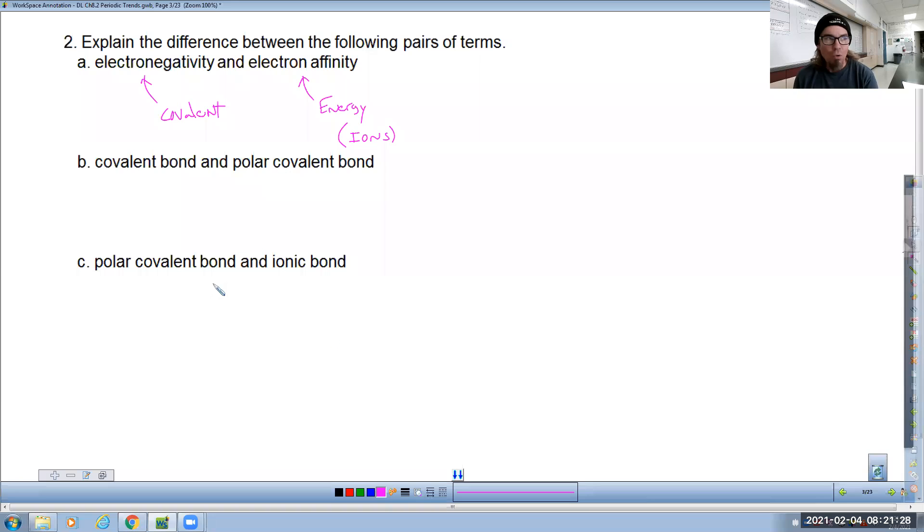Covalent bond versus a polar covalent bond. We could explain that one by example. If you had H-H versus H-F, here you would say this is a polar bond and this is just a covalent bond in general. In fact, maybe we could even go so far as to say this is a non-polar covalent bond.